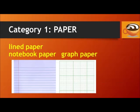If the paper has horizontal lines for writing, it's called lined paper, or notebook paper. And if it's divided into little squares, it's called graph paper.